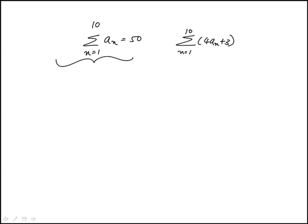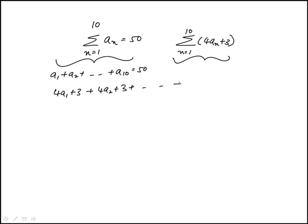So one way to do this is to look at visually what this really means. This means a1 plus a2 to a10 is 50. This would mean 4 times a1 plus 3, plus 4a2 plus 3, all the way to 4a10 plus 3.